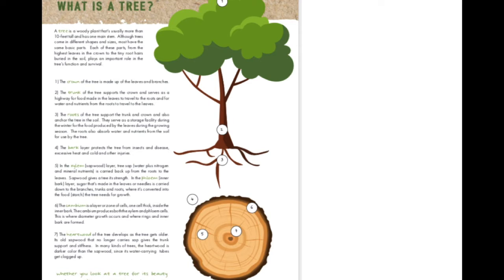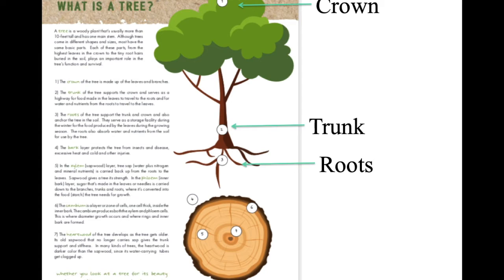I'm also going to give you access to that in this assignment. Let's talk about the different parts of a tree. Part number one, at the very tip top, we call that the crown. Part number two is going to be the trunk of the tree. And underground we have part three — the roots. I think everybody would probably have guessed all of those except for the crown. I didn't realize the leafy top portion of the tree is called the crown.